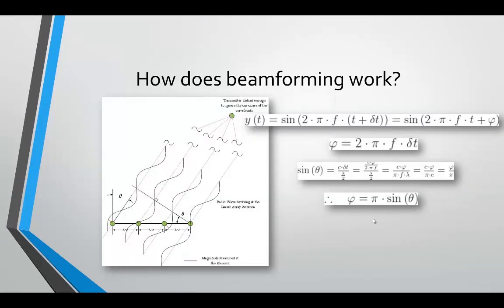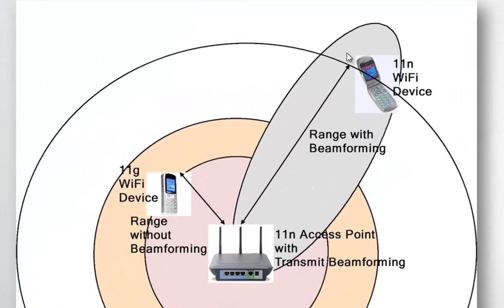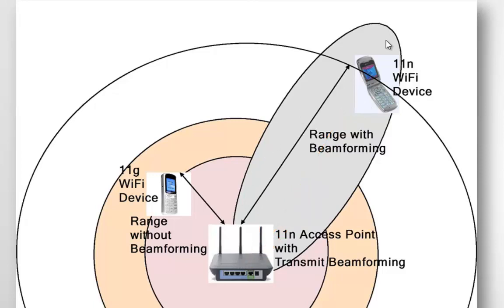Beamforming is a technology that's still somewhat complex, but here's a quick overview. It works by sampling the radiated energy that the client radio senses on its antenna. It calculates a value, kind of like a matrix, and sends that back to the access point. The access point then shapes the transmitted energy into a beam, giving you a higher signal and greater data rate even at greater distances.